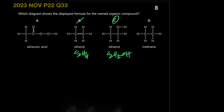For option D labeled methane — 'meth' means one carbon, but the structure shows two carbons, so D is wrong. For option A labeled ethanoic acid — ethanoic acid must have the carboxyl functional group: a carbonyl carbon directly bonded to OH. In that structure there's an extra oxygen that shouldn't be there, so A is also wrong.